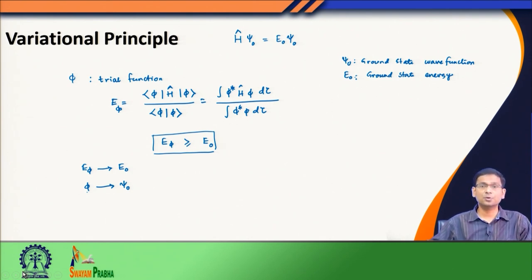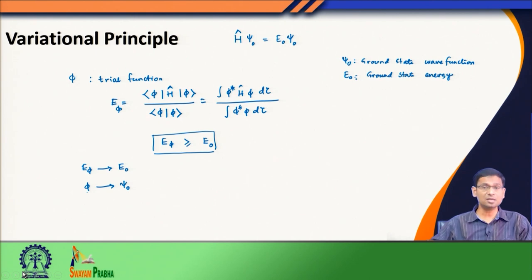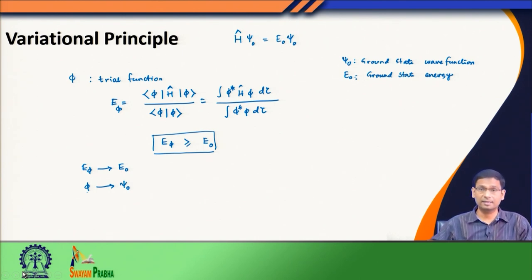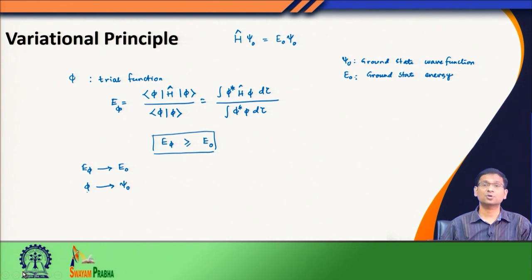In the variational principle, suppose we have a Hamiltonian whose exact ground state psi_0 and exact ground state energy E_0 we do not know. In that case, we can make a guess — we define a trial function phi — and evaluate an energy corresponding to this trial function, called E_phi. What the variational principle guarantees is that E_phi is always greater than or at best equal to E_0. When E_phi equals E_0, the trial function phi is representative of the true ground state wave function psi_0.